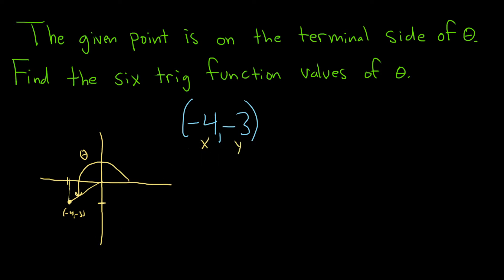In order to find the six trig function values for theta, we have to use a formula. First note that r is given by the formula the square root of x squared plus y squared. So in this case, we have the square root of negative 4 squared plus negative 3 squared. This is the square root of 16 plus 9, square root of 25, which is 5. So r is 5.